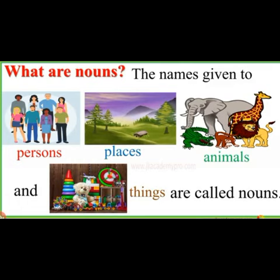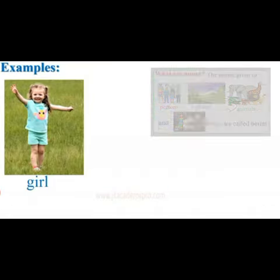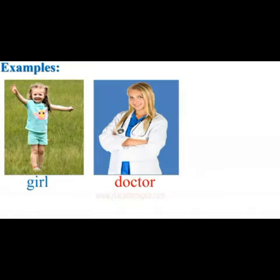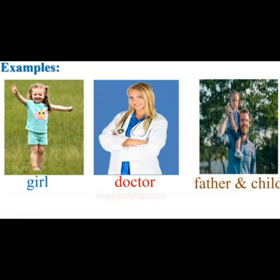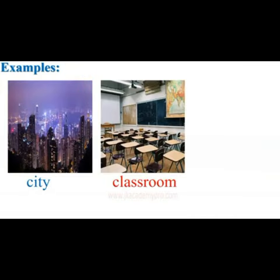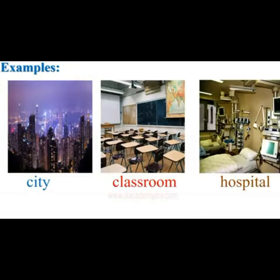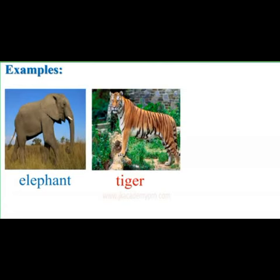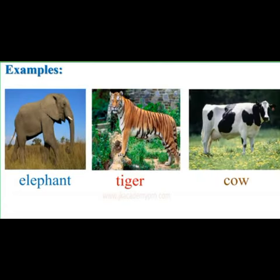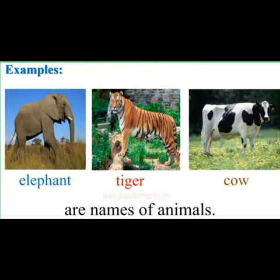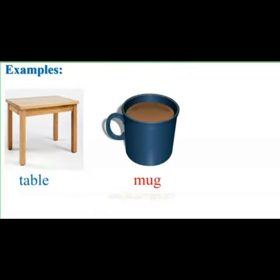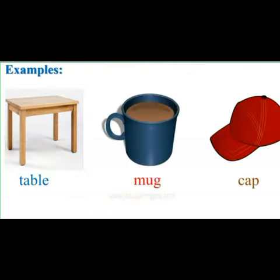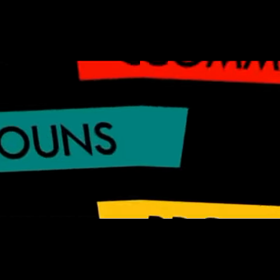Girl, doctor, father, and child are names of people. City, classroom, and hospital are names of places. Elephant, tiger, and cow are the names of animals. Table, mug, and cap are the names of things.